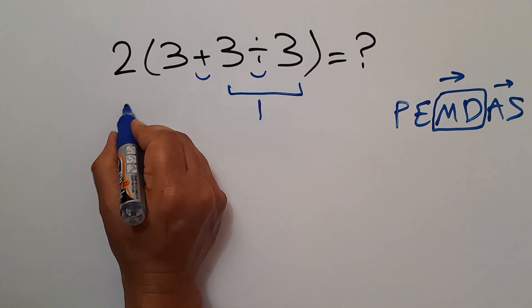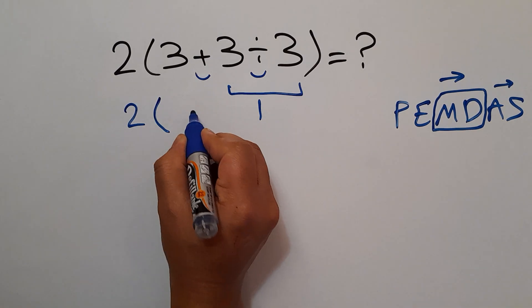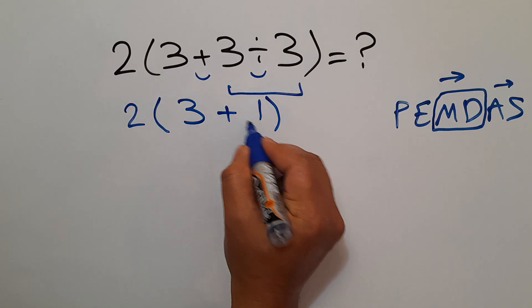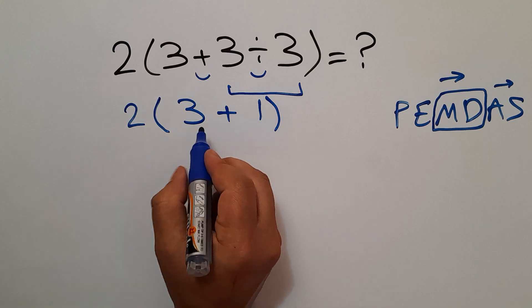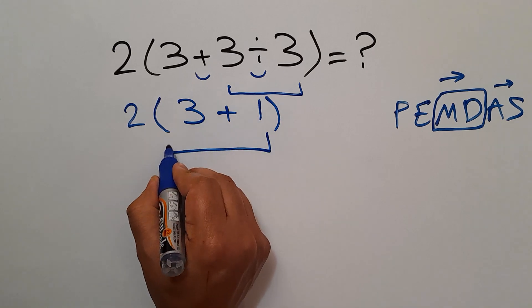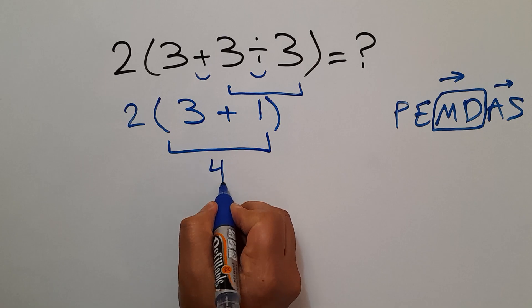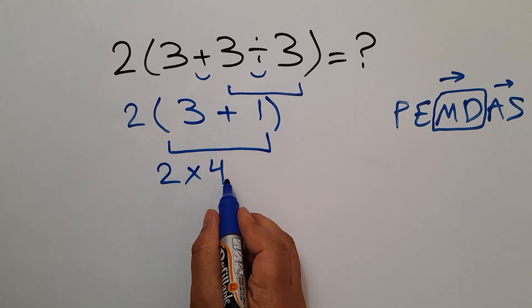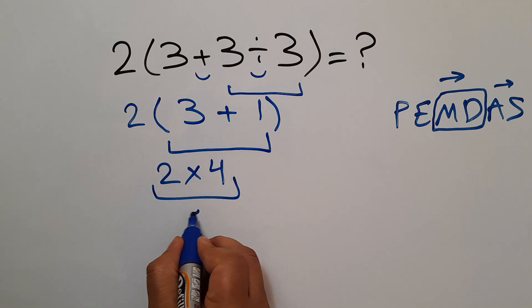So, we have 2 times 3 plus just 1. So, we have 2 times 4, and 2 times 4 equals 8.